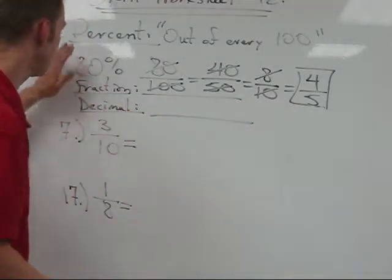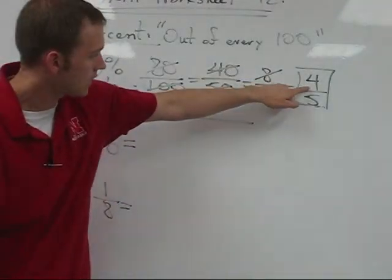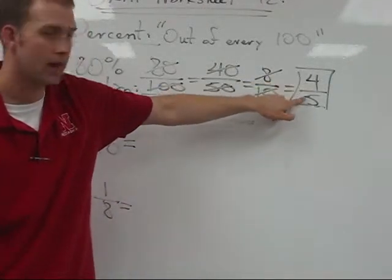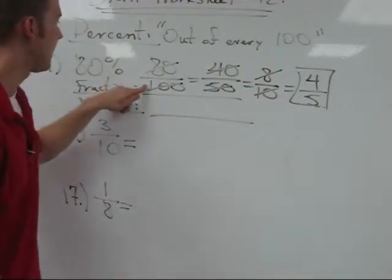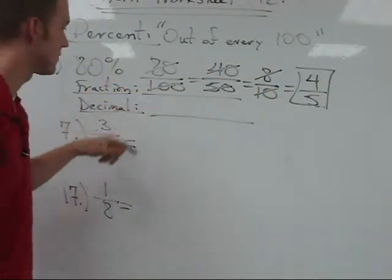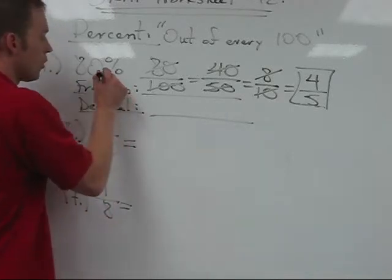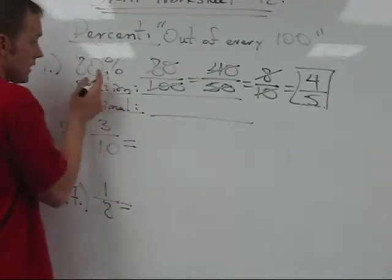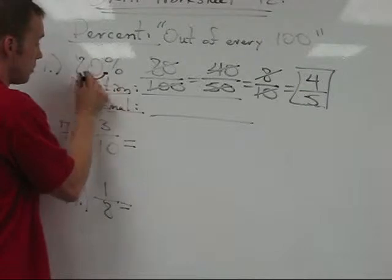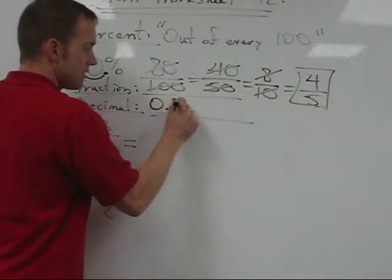Okay, so four fifths. Now, changing this to a decimal, of course, we know we can divide four by five. But here's the cool thing about it. This is 80 out of 100 or 80 one hundredths. Here's all we need to do. A quick, simple way to put it is, whatever the decimal is on the percentage, let's just scooch it back twice to the left. So this becomes 0.80.